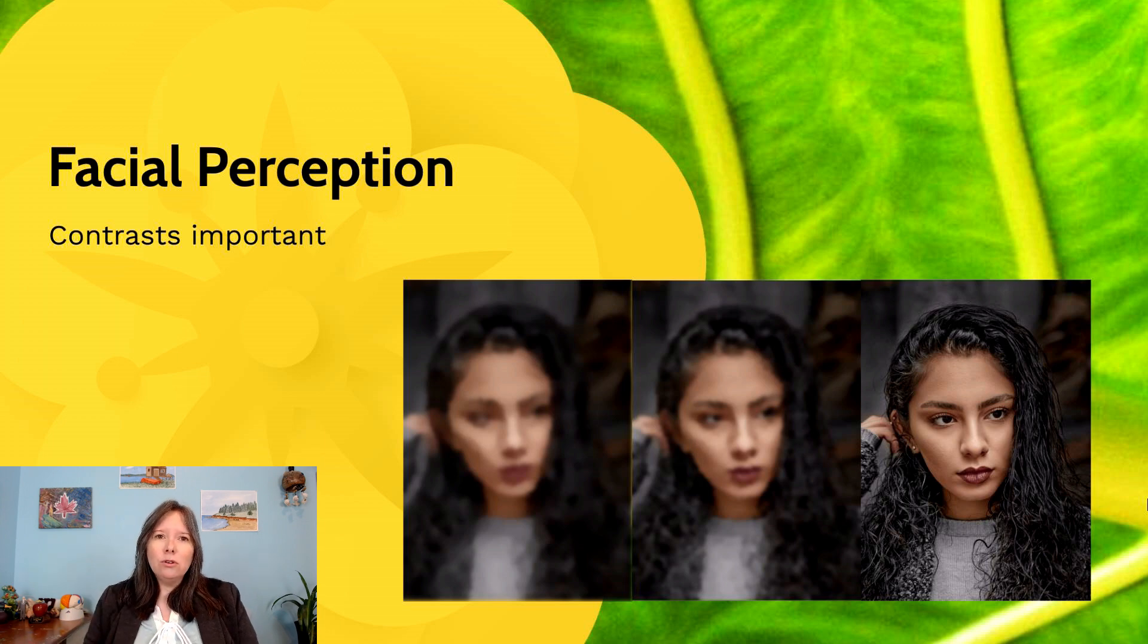Of course, as they get older, around five months of age, they're more so going to see what's in the middle picture. Now things are a little bit clearer, and they're going to notice if the eyes are upside down or if the mouth is upside down or what have you.